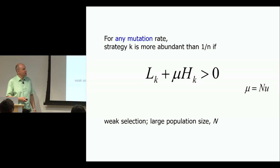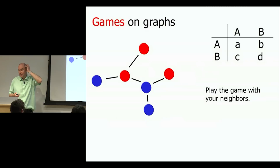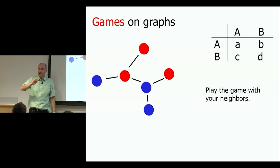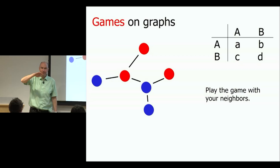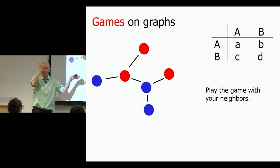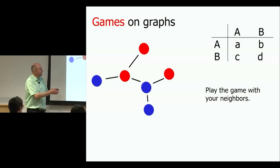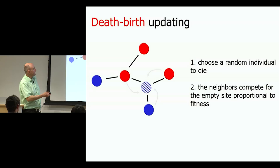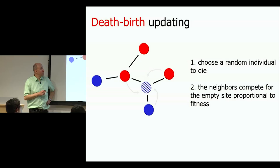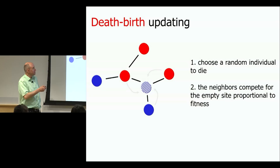Now we ask: how does population structure affect games — frequency-dependent selection? We are on a graph and play the game with neighbors according to a payoff matrix. The update rule I discuss is death-birth updating: a random individual is chosen, updates its strategy by looking at neighbors, and neighbors win that position proportional to their success. In a social setting this means: I want to rethink what I'm doing, I look at my friends and pick something from a friend who is doing well.